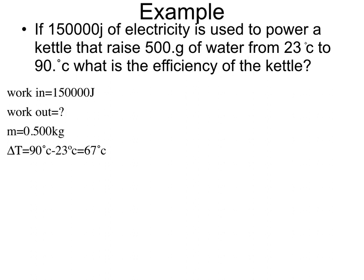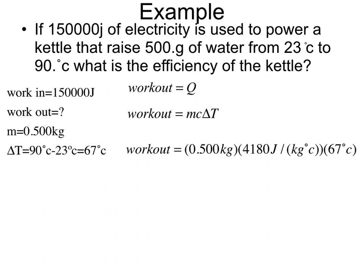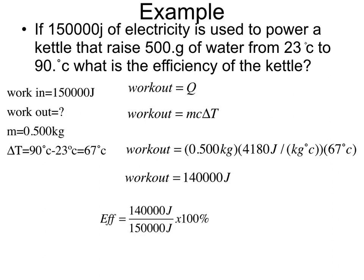Now, in this case, the work that is being done is increasing the temperature of the water. So therefore, our work output is going to be equal to our change in thermal energy. So therefore, our work output would be equal to our mass times heat capacity times change in temperature. So we'll calculate what that is, and that's 140,000 joules. Now, efficiency is our output over our input times 100%, so we'll substitute those in, and we get that the kettle was 93% efficient.